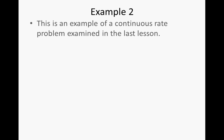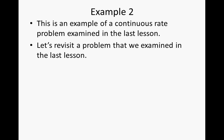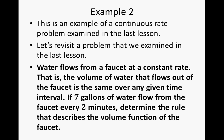All right, let's take a look at example two. This is an example of a continuous rate problem examined in the last lesson. Let's revisit the problem we examined in the last lesson, which is the water flows from a faucet at a constant rate. That is, the volume of water that flows out of the faucet is the same over any given time interval. If seven gallons of water flow from the faucet every two minutes, determine the rule that describes the volume function of the faucet.